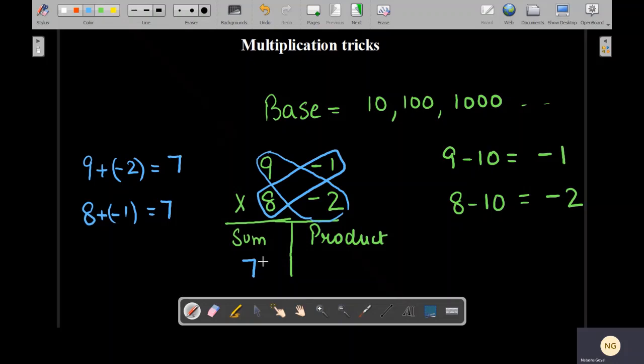Now on the right hand side, we will be writing the product of these two numbers. So minus 1 times minus 2 that will give us 2. Now we will write the product here, 2. So we have the answer, that is 72.